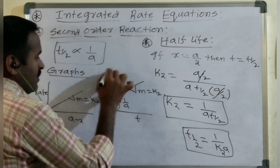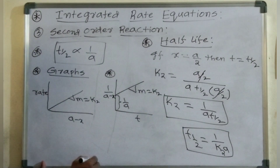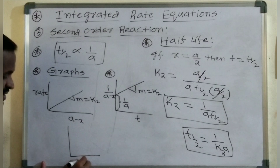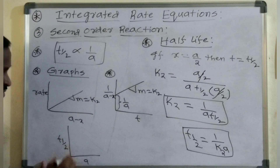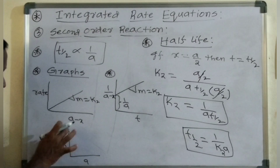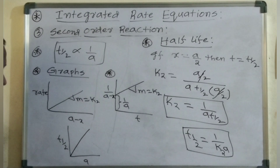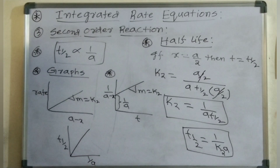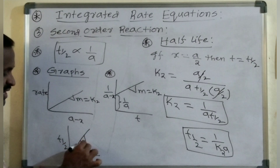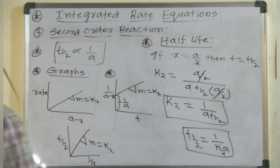Another graph: 1/(A minus X) versus time gives a straight line. Also, T½ versus initial concentration gives an inversely proportional relationship. If you plot T½ versus 1/A, you get a straight line passing through the origin, with slope M equals K2.